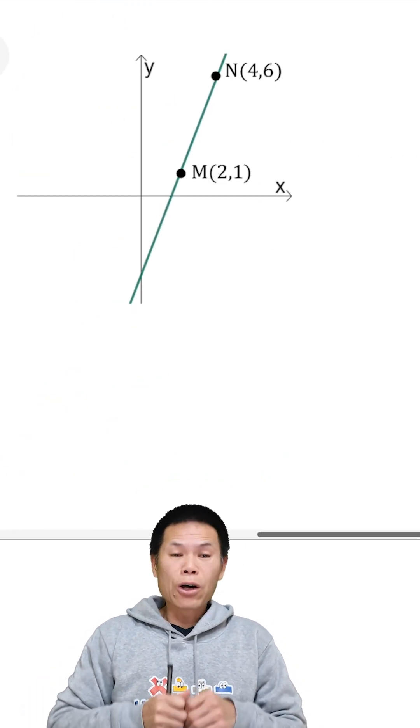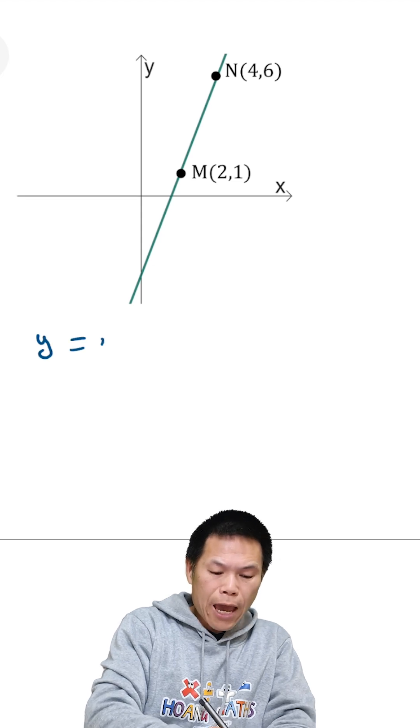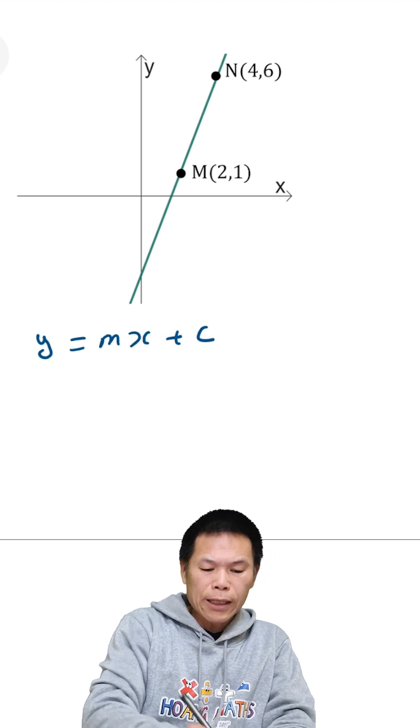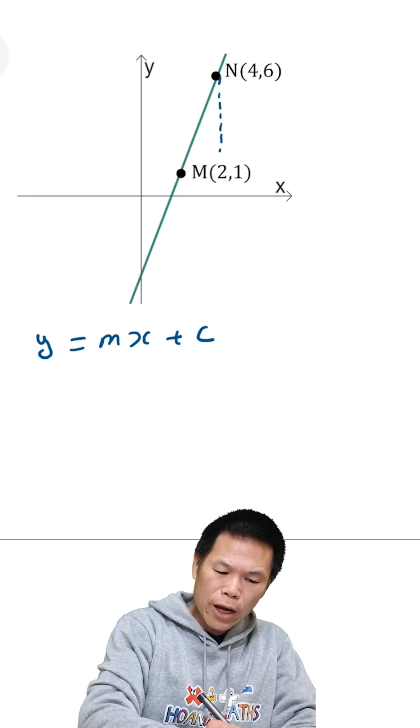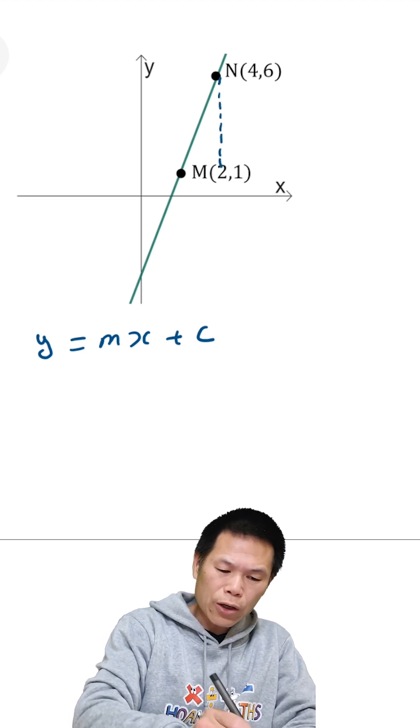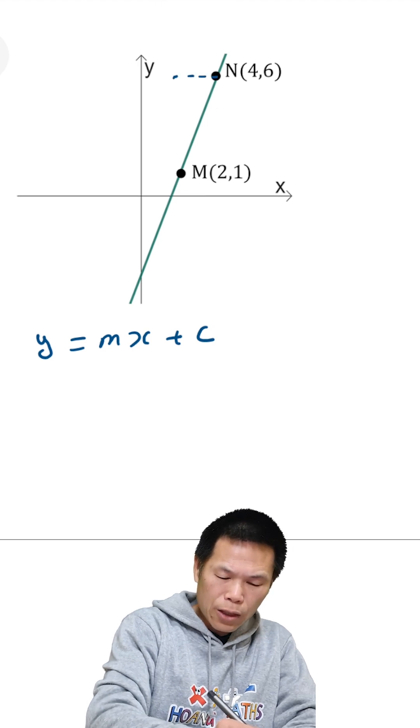Question number eight. So again, y equals mx plus c. That is the rule for a straight line. Let me just construct a right angle triangle. I can construct it this way, and there's nothing wrong with that.